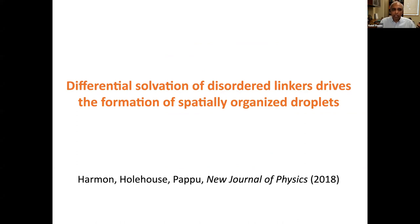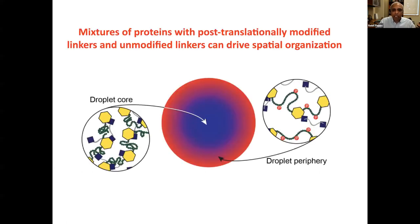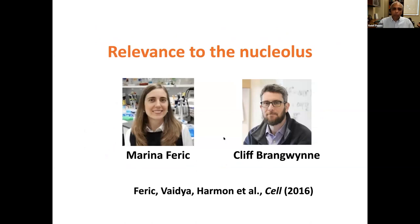We then did all the titrations — affinity, valence — but really the gist was: as we decrease the effective solvation volume on the high excluded volume linkers, we start to lose spatial organization; if we crank it up, we get the core-shell effect. A simple precept: differential solvation of disordered linkers can give you spatially organized droplets. And this connects to Mike Rosen's recent work in collaboration with the Bhatt lab, where you have exactly the same polymer but a mixture of molecules where some linkers are phosphorylated and some are not — which should produce a core-shell architecture.